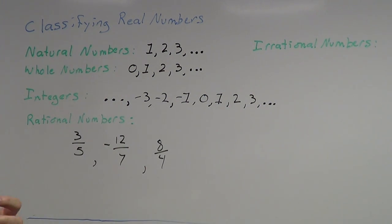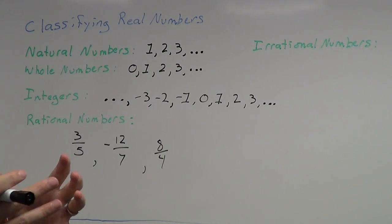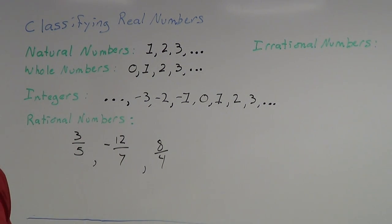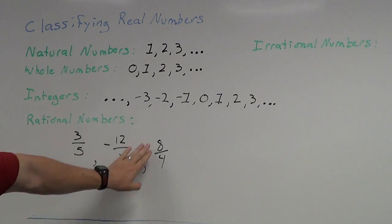You can take your whole numbers, your integers, your natural numbers, you can take any one of those and make them into a fraction. So that means our natural numbers, our whole numbers, our integers, they are all rational numbers because we can make them into fractions.